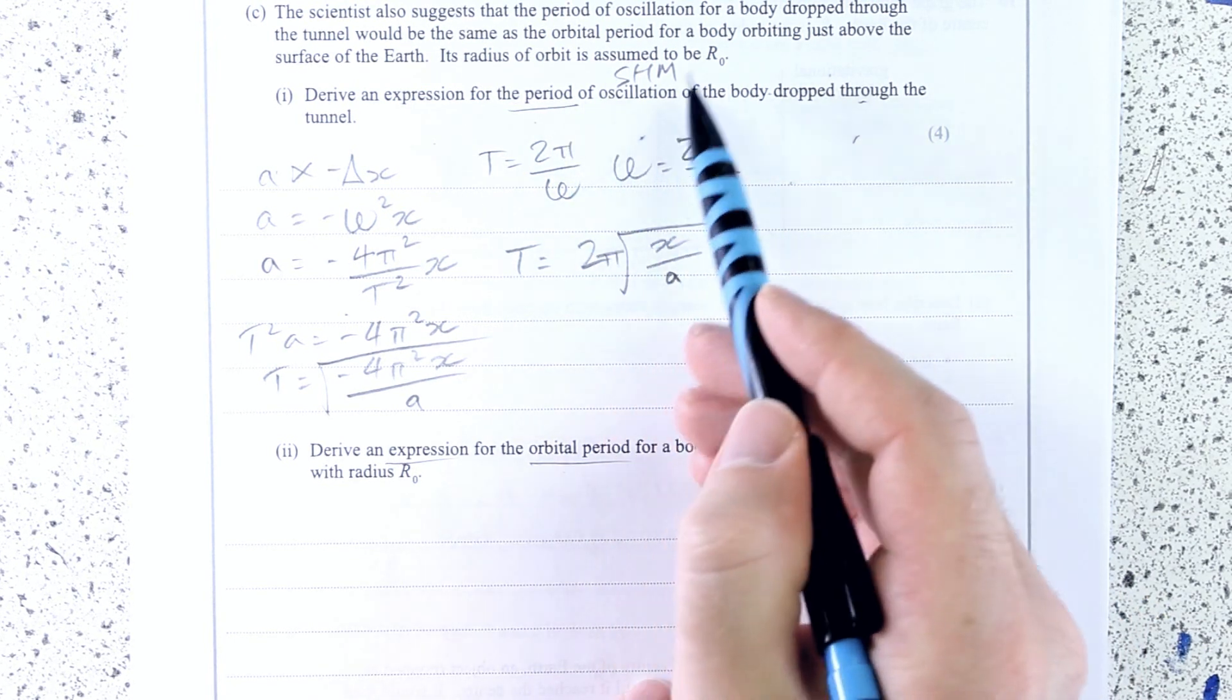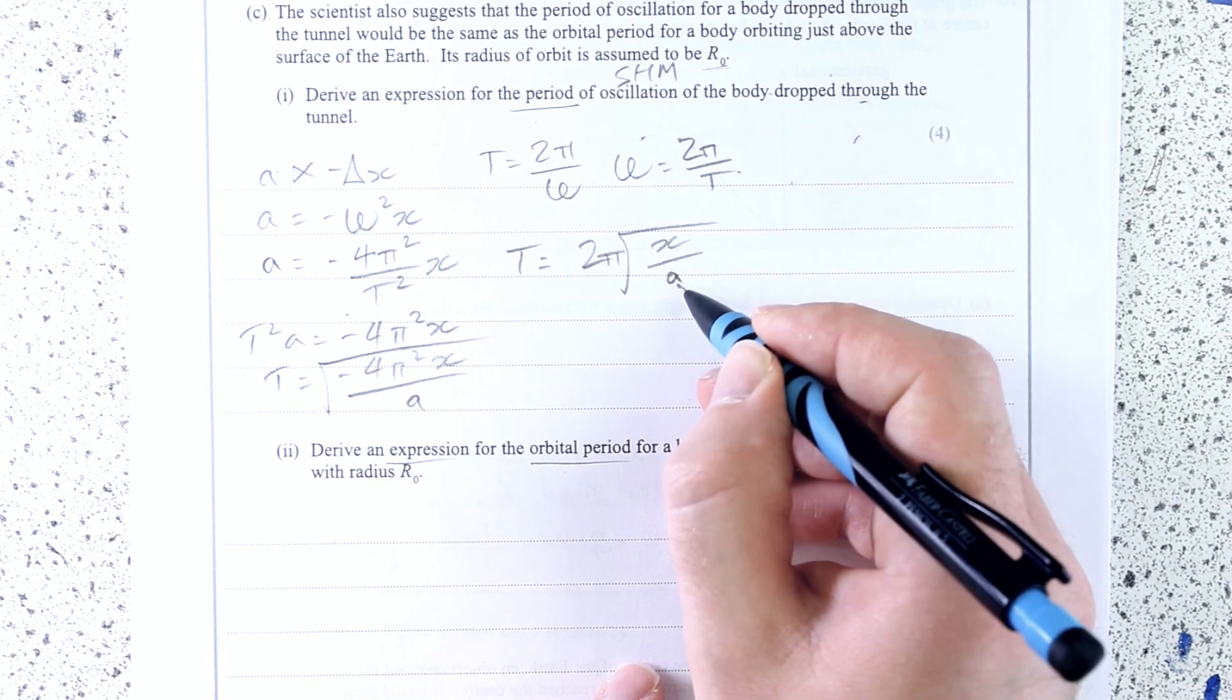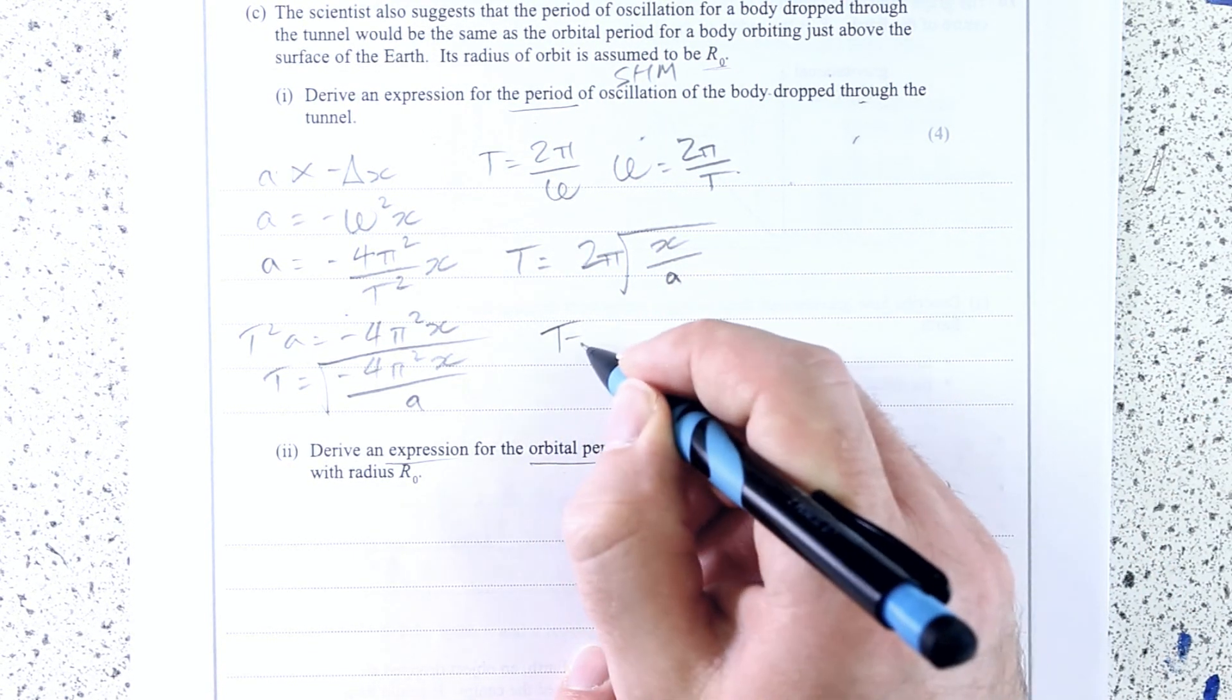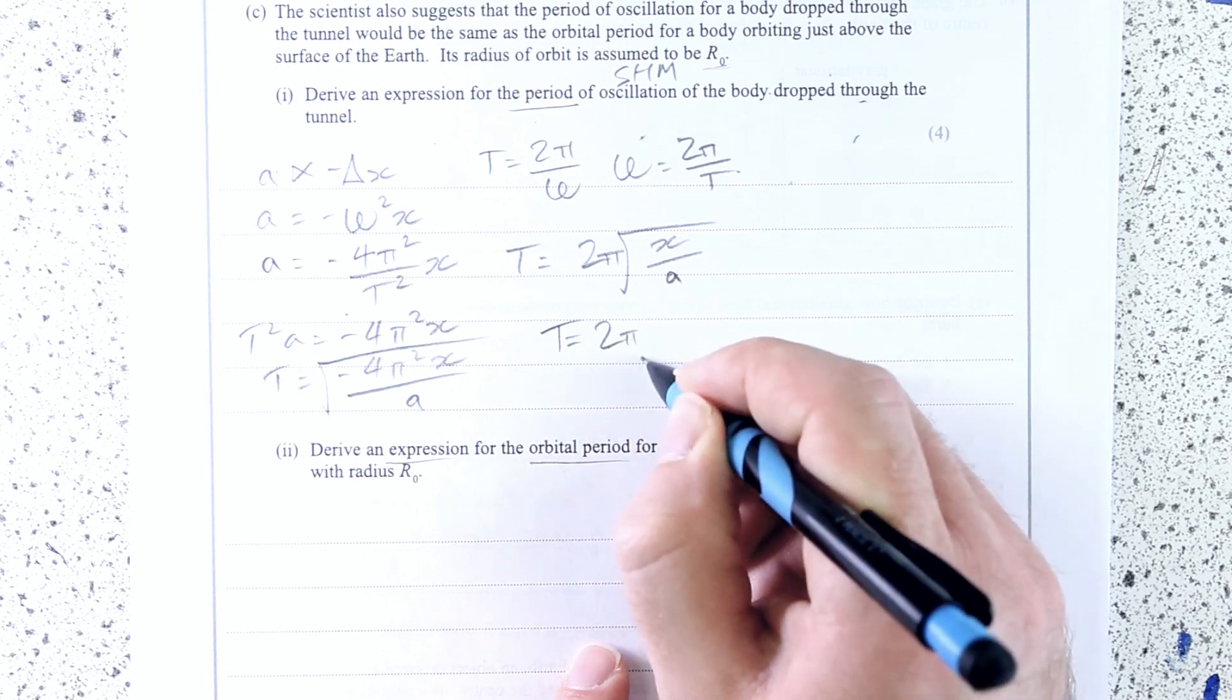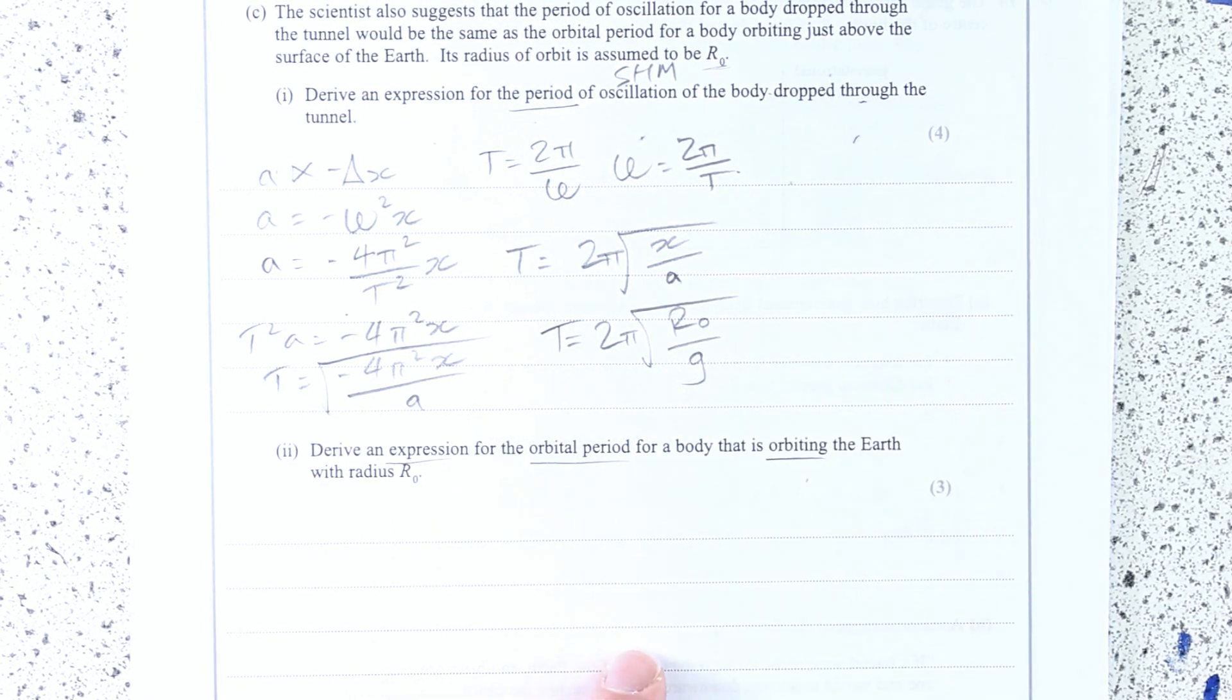Now what is this in relation to our data we've got? Well, r naught is x and a is g. So the last thing I might just do, just to show the examiner I'm not an idiot, is r naught over g. That's the first one.